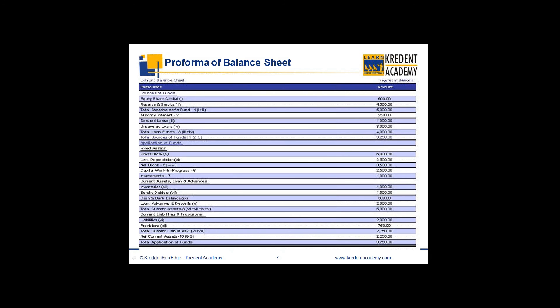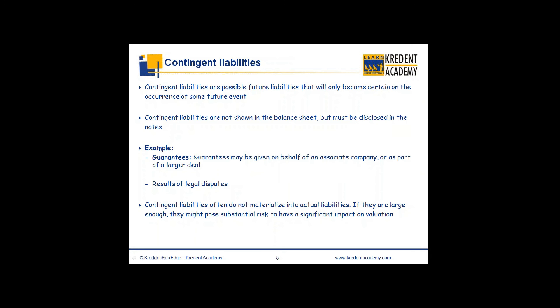The application of funds shows how sources are utilized. Funds are mainly used for purchasing fixed assets like building, land, plant and machinery. They may also be invested in current investments or non-current investments. A large part of funds is also used for day-to-day operations in terms of current assets — mainly inventory, debtors, work in progress, cash and bank balances. In this process, goods purchased on credit are shown as current liabilities and provisions.